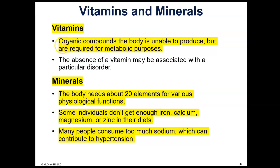Vitamins are defined as organic compounds — chemicals that contain both carbon and hydrogen — that the body is unable to produce but are required for metabolic purposes. Minerals are more like metals, as defined on the periodic table. The body needs about 20 elements for various physiological functions. Some individuals don't get enough iron, calcium, magnesium, or zinc in their diets. Many people get too much sodium, which can contribute to high blood pressure or hypertension.